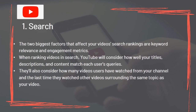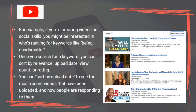For Search, the two biggest factors that affect video search rankings are keyword relevance and engagement metrics. YouTube considers how well your titles, descriptions, and content match each user's queries, as well as how many videos users have watched from your channel and the last time they watched videos on the same topic. For example, if creating videos on social skills, you might target keywords like 'being charismatic.' Once you search for a keyword, you can sort by relevance, upload date, view count, or rating.